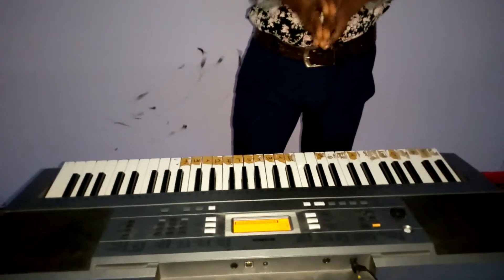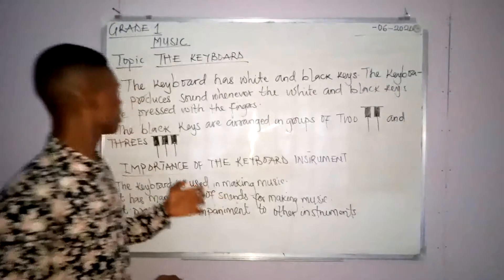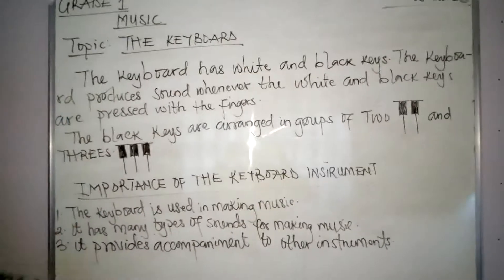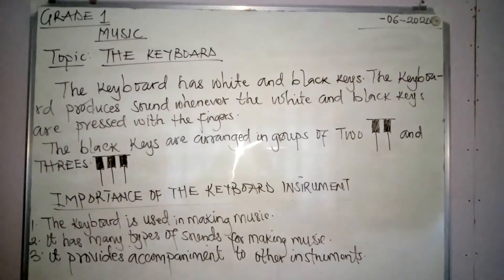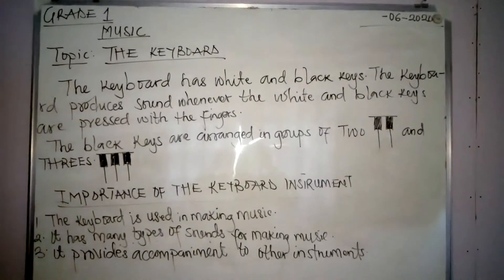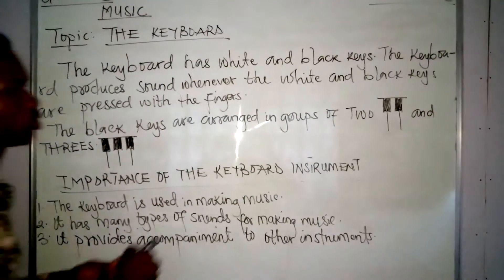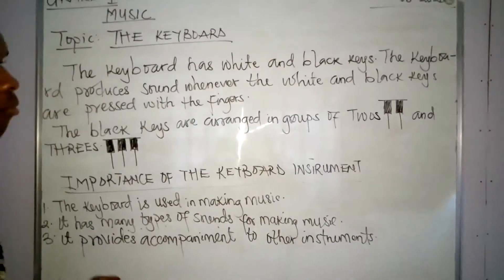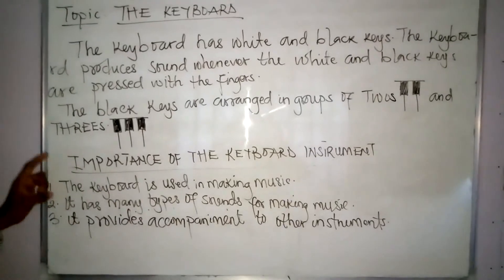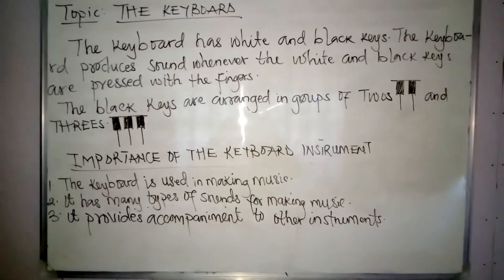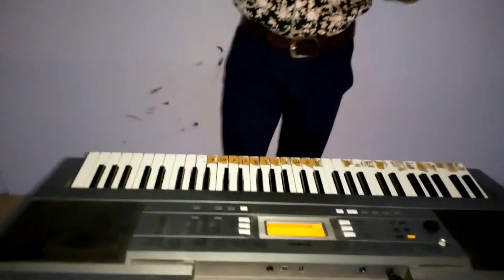Now we'll talk about the importance of the keyboard — why it is very important that we use the keyboard instrument. The keyboard has white and black keys. The keyboard produces sound whenever the white and black keys are pressed with your fingers. The black keys are arranged in groups of twos and threes. Number one: the keyboard is used in music making. Let me play a piece for you to hear how the keyboard is being used in making music.